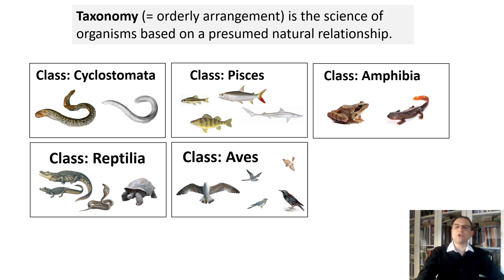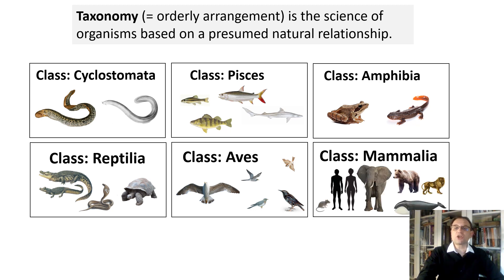There are about 10,000 species of birds worldwide occupying almost all of Earth's habitats. They are assigned to class Aves — the correct pronunciation is the Latin Aves. All mammals share at least three characteristics not found in other animals: three middle ear bones, hair, and production of milk by modified sweat glands called mammary glands.